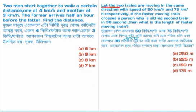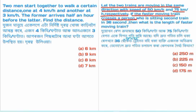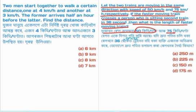Two trains are moving in the same direction with speeds of 50 km per hour and 75 km per hour respectively. If the faster moving train crosses a person sitting in the second train in 36 seconds, then what is the length of the faster moving train?